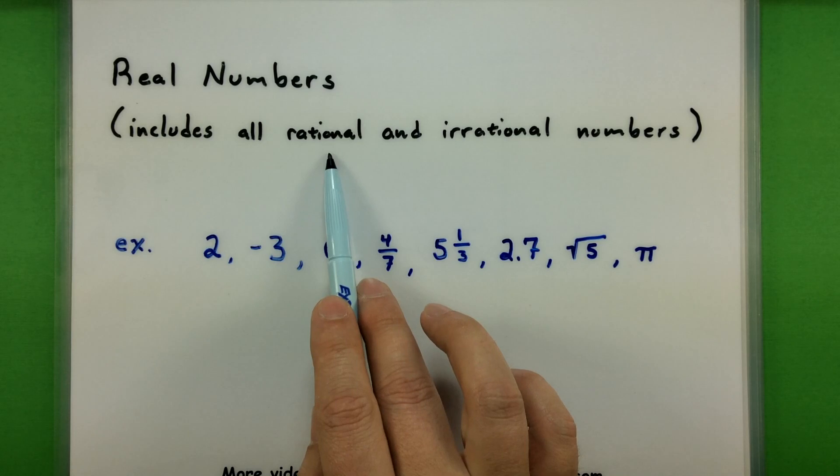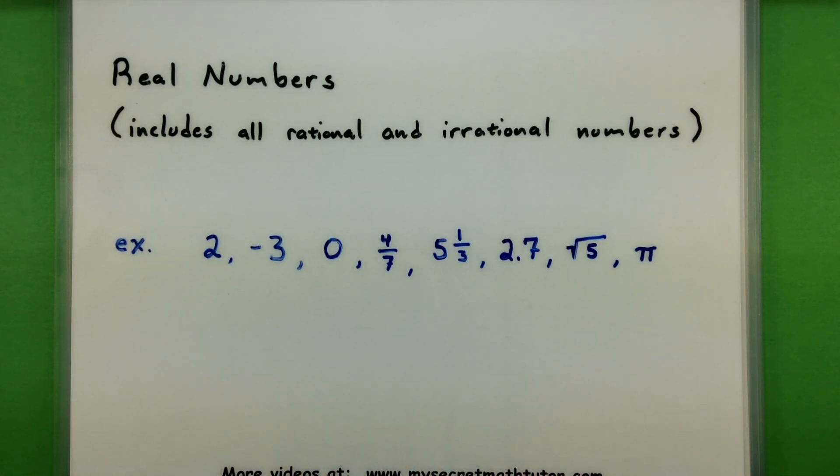Now since it contains the rational numbers, you'll also see numbers that can be written as a fraction. Stuff like 4 sevenths, 5 and 1 third, 2.7. Since all of these can be written as a fraction, those are rational. And the real numbers contain all of the rationals, so that's why they're in the group.